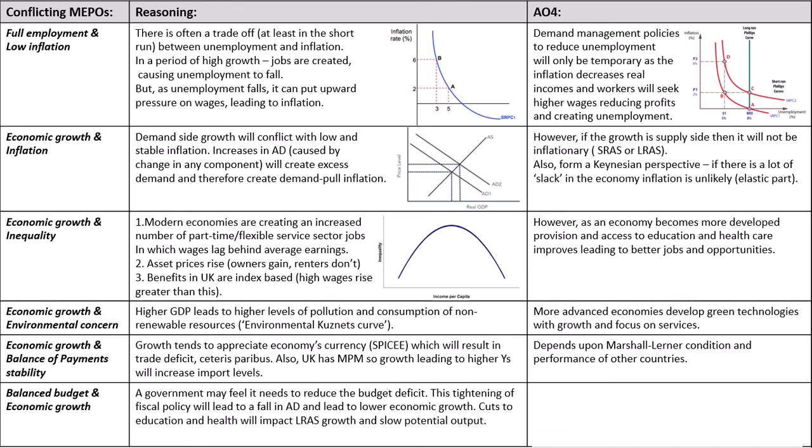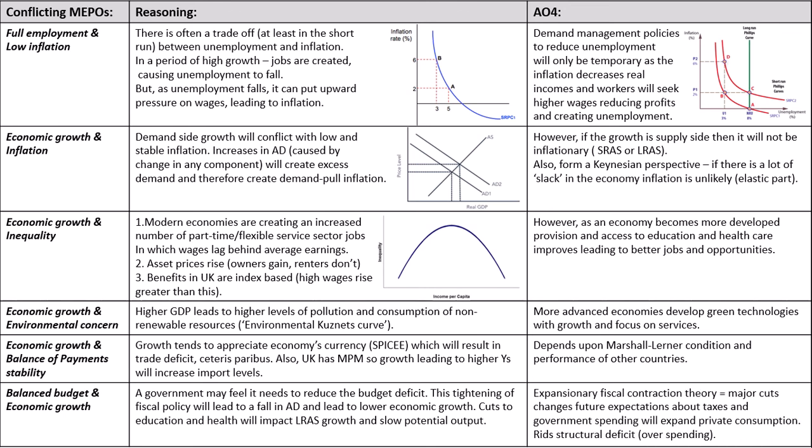For AO4: at the time austerity was introduced, the idea of expansionary fiscal contraction was put forward — major cuts and changes to future expectations about taxes and government spending might expand private consumption and have an expansionary impact on the economy. It may also rid the structural deficit caused by overspending, so these cuts might actually incentivise more efficient use of public sector money and have a positive impact on growth. You could also look into crowding-out theory, or crowding-in, as relevant here.